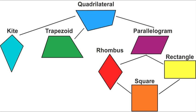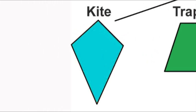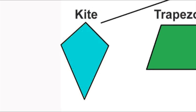Kites sit in the tree by themselves — no parallel sides. They have two pairs of congruent sides, but they have to touch before a kite can fly. The diagonals cross at 90 degrees. You know Ben Franklin — he flew one of these! They sit on a lonely little stem; there are no others quite like them.